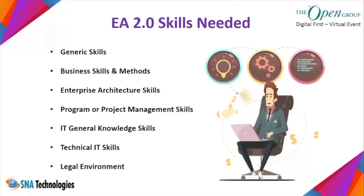Additional skills needed in EA 2.0 included program and project management skills, general IT technical knowledge, and legal skills for laws and regulations. The enterprise architect needed to be a jack-of-all-trades — covering all those domains across the period from 2000 to 2020.